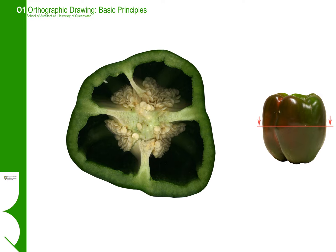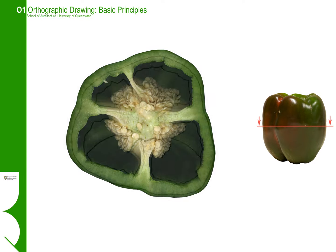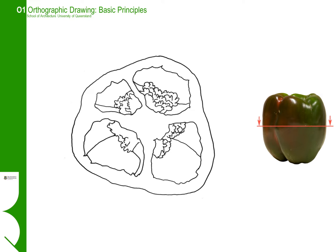We use plans and sections so we can see the organisation and how the space works inside a building. A plan view, or plan cut view, is simply just a cut through the object at a certain height above the ground plane. You can see here the cut through the capsicum translated into a very simple outline drawing.